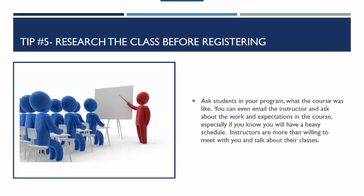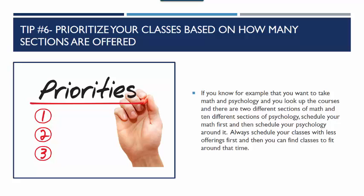Research the class before registering. You can do this by talking to your classmates, or you can email the instructor and ask about the work and expectations in the course, especially if you are having a heavy semester. Prioritize your classes based on how many sections are offered. For example, if you want to take math and psychology and there are only two sections of math but ten sections of psychology, put math on your schedule first and then adjust your psychology classes around it. Always schedule classes with fewer offerings first, then find other classes to fit around that time.